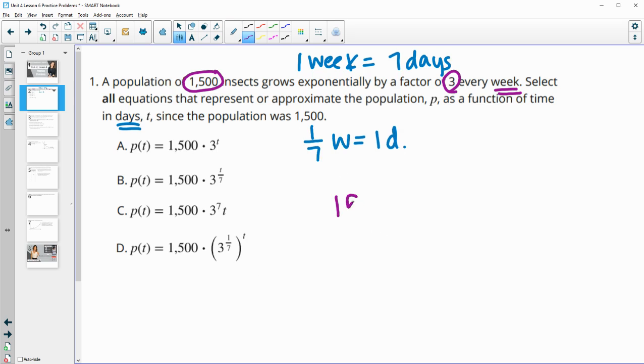So we're going to have to account for that in our exponent. So we should have the initial amount times the growth factor of three and then for days that'll be one seventh of a growth factor. So one seventh of a week.